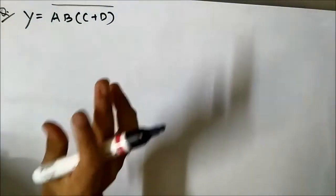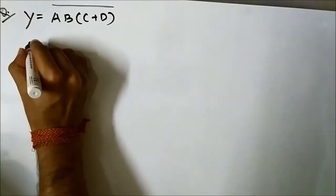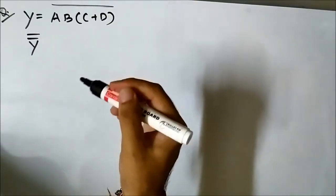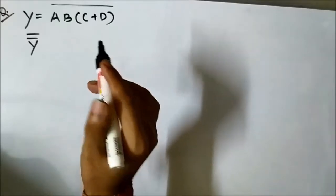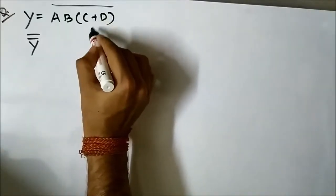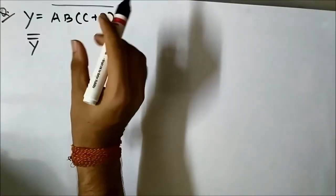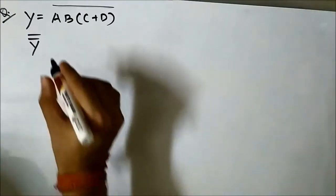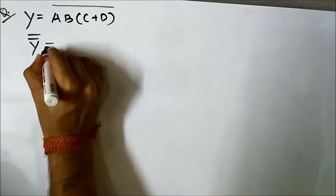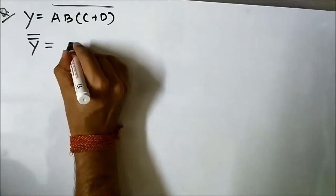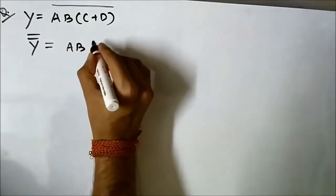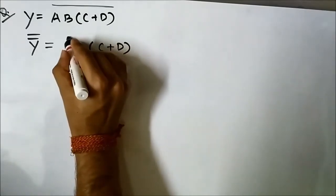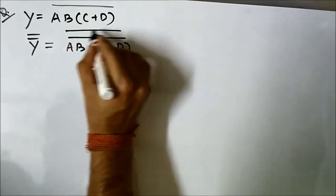First we have to use the double complement rule to convert the given Boolean expression into standard form for implementation using NAND gates, which is to convert the OR sign and replace it — to convert it into AND form, product form. So when we double complement this whole expression AB·C plus D whole complement, and we again double complement it.